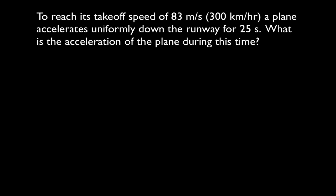We're going to have a plane that's going to reach a takeoff speed of 83 meters per second — 300 kilometers per hour. The plane uniformly accelerates down the runway for 25 seconds, and we want to know what is the acceleration of the plane during this time. The first thing you should always do is write down all five of the variables that are in the kinematic equations.